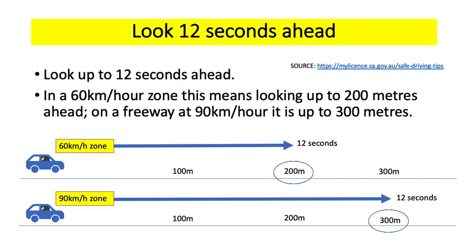The South Australian government promotes looking 12 seconds ahead. In a 60 km/h zone, this means looking up to 200 meters ahead, and on the freeway at 90 km/h it is up to 300 meters ahead. Look long — and if your vision is compromised, it will probably require you to slow down and assess the situation until it is clear to proceed.